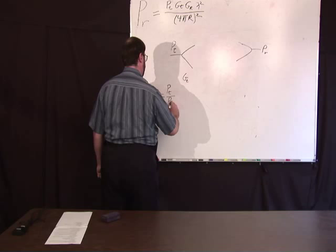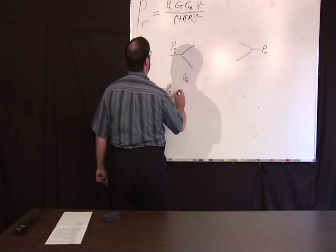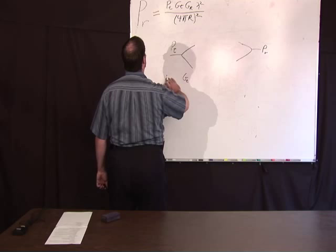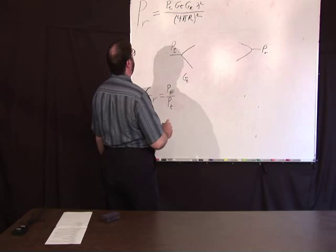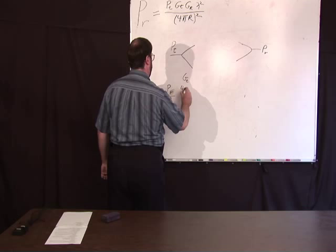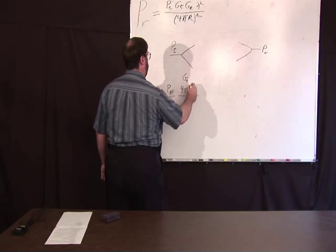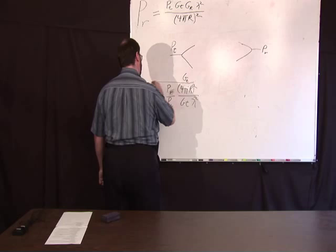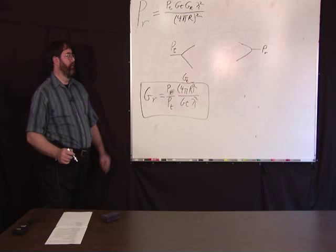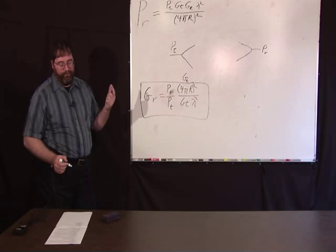That's just one over the loss, or attenuation, times, sorry, I got that backwards, it's PR over PT, okay, so it's the loss, that is the loss, times one over, times four pi R squared over GT lambda squared. So, if you know the gain of one antenna, you can compute the gain of the other just by measuring the, now that, I should say this is oversimplified, and we'll get into that in a minute.